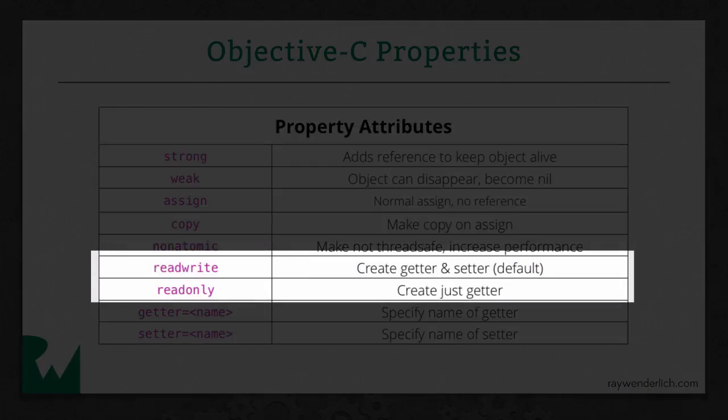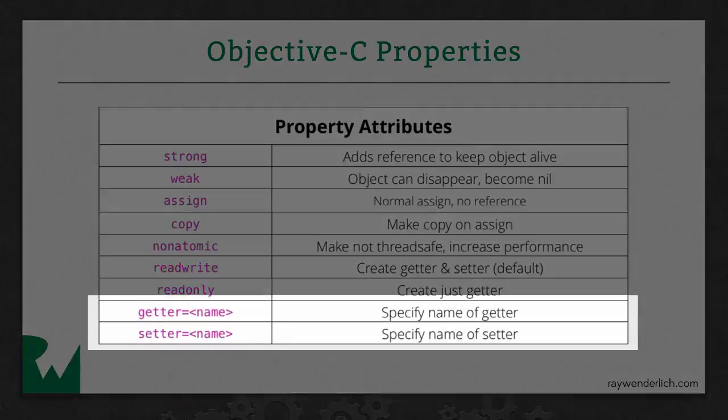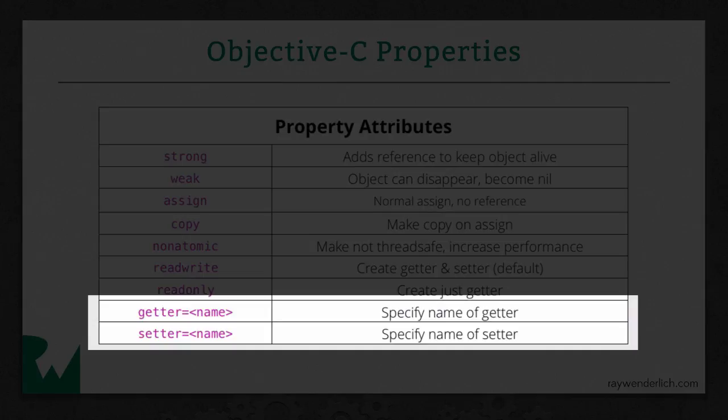Next, by default, a property will automatically create a getter and a setter for you. It's called the read-write property. But you can only generate the getter if you'd like, which would be read-only. And you can also change what the names of the methods are by saying getter equals and setter equals and specifying what name you would like those to be. An example of when this is useful is booleans. It's typical to change the getters and the setters to be is whatever the name of the boolean is rather than get whatever the name of the boolean is. For example, say you had a boolean that said whether or not a game was fun. Instead of get fun, it might make more sense to call it is fun.